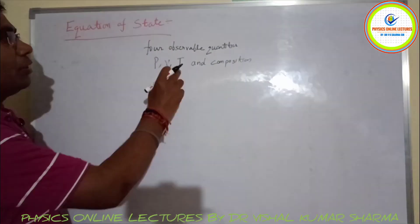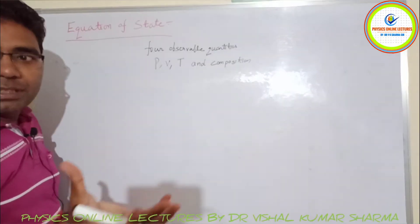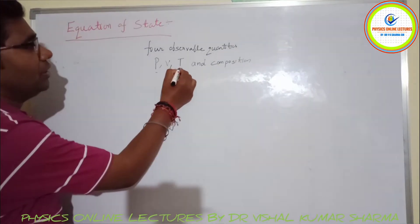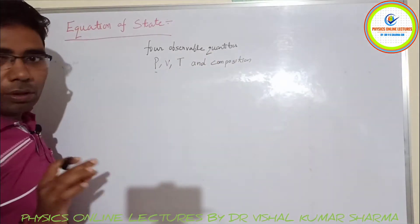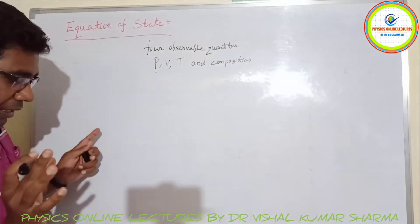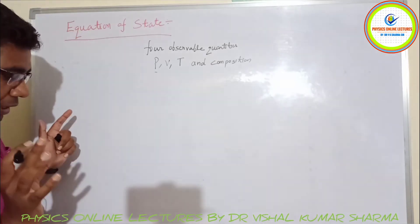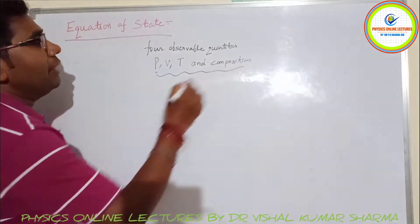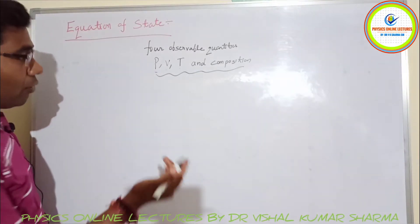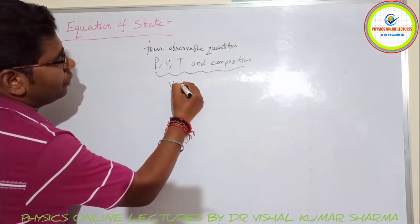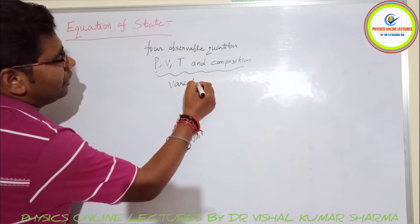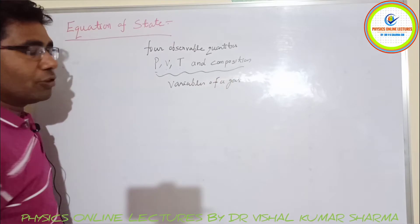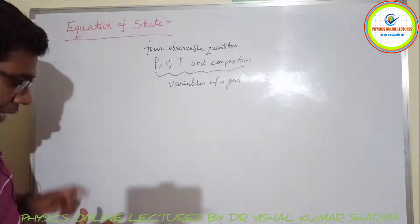So we have these four observable quantities — pressure, volume, temperature, and composition — which are called the PVT variables of a gas.